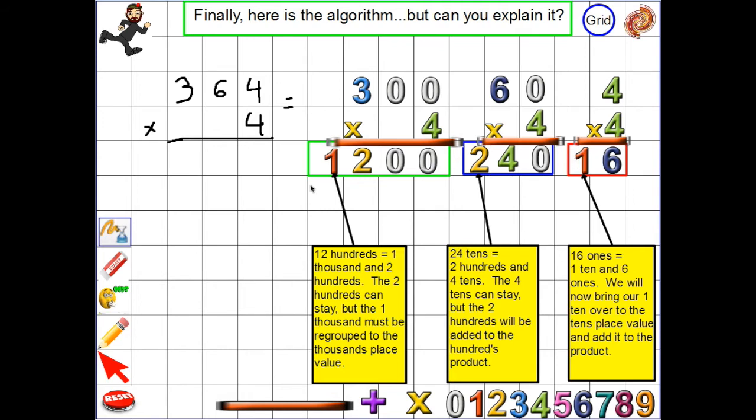This is the same problem. I just have little explanations here. The four times four is 16, and below it, it says this is 16 ones. I mean, it's one ten and six ones. We're going to bring our one ten over to the tens place value and add it to the product that occurs in the tens. And that's very important, it's the orders of operation.